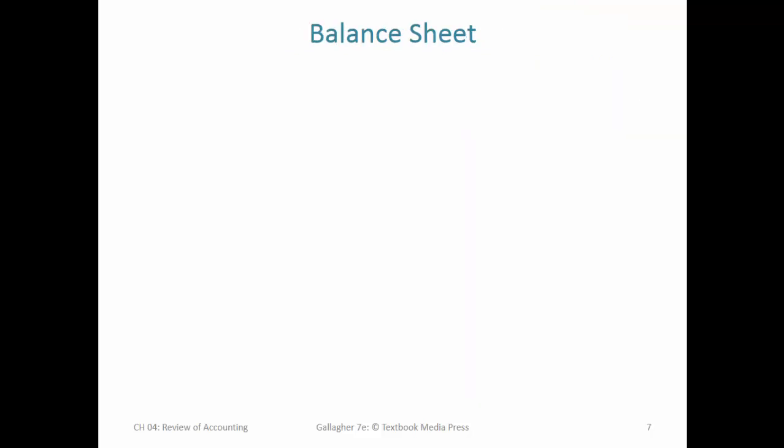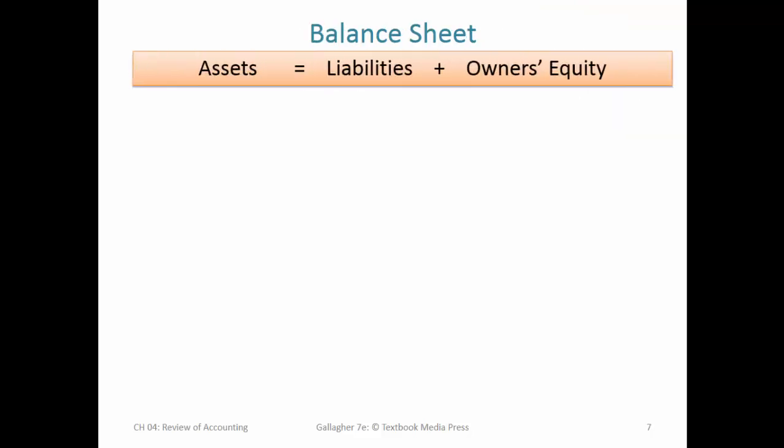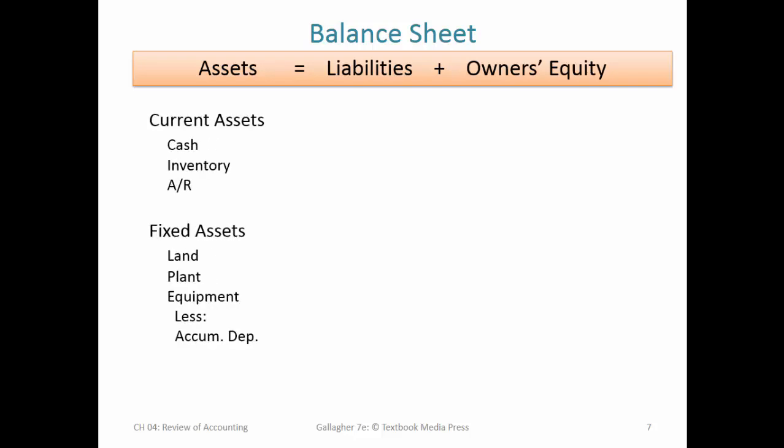Now let's take a look at the balance sheet. Assets equals liabilities plus owner's equity is the balance sheet equation. We typically illustrate this with the T-account, but the actual financial statement is just going to be listed in one column. Under the heading of assets, we list them in order of decreasing liquidity — the most liquid things first.